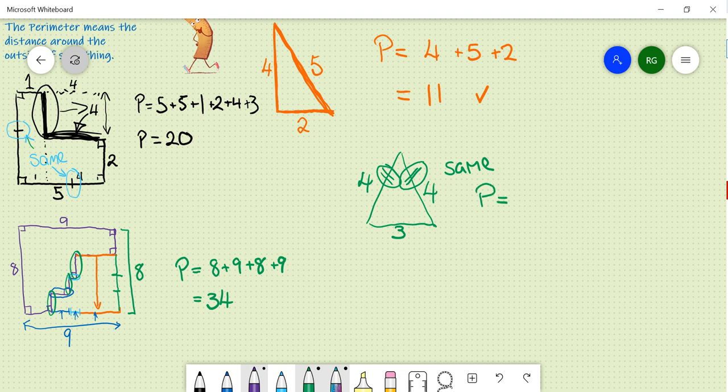So the perimeter is four, plus four, plus three. Equals 11 again, similar to that last triangle.